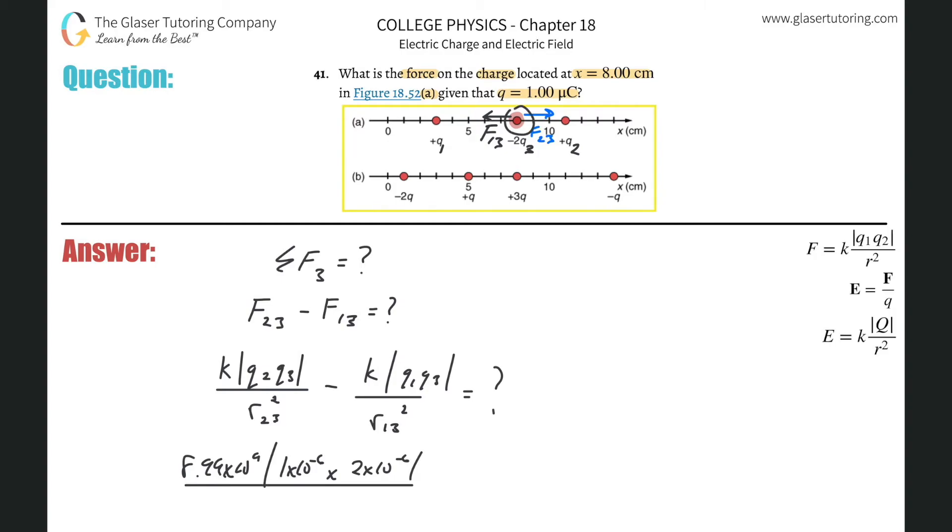And then this whole thing all over the distance between those two squared. So this is 8 centimeters. This looks like 11 centimeters to me, so the difference is 3 centimeters, but you know we need that in meters, so just move the decimal two places to the left. And therefore that's going to be 0.03 squared.